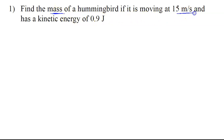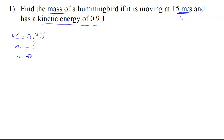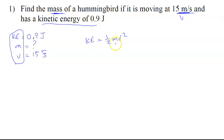This little hummingbird is flying along — meters per second would be the velocity — and we're told that the kinetic energy is 0.9. We're trying to find a formula that involves all the variables we have, and the definition of kinetic energy is ½mv². I've got the kinetic energy and the velocity, so I need to solve for mass: multiply by two and divide by v squared.